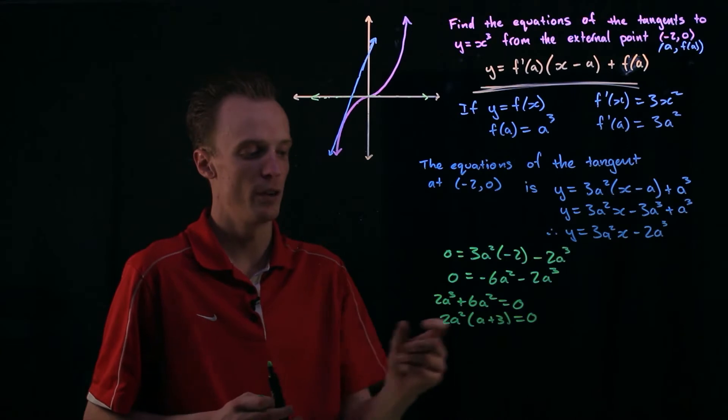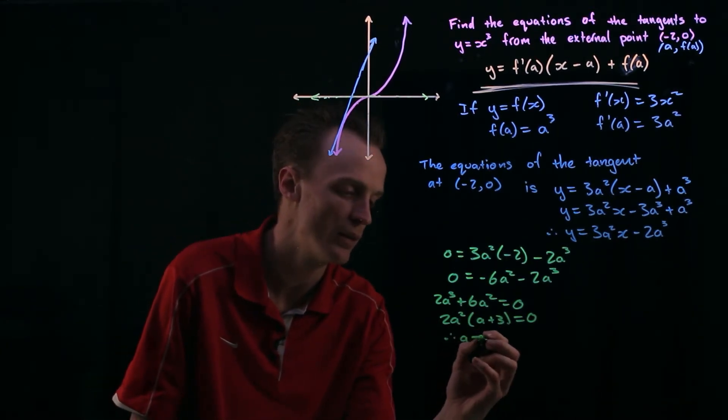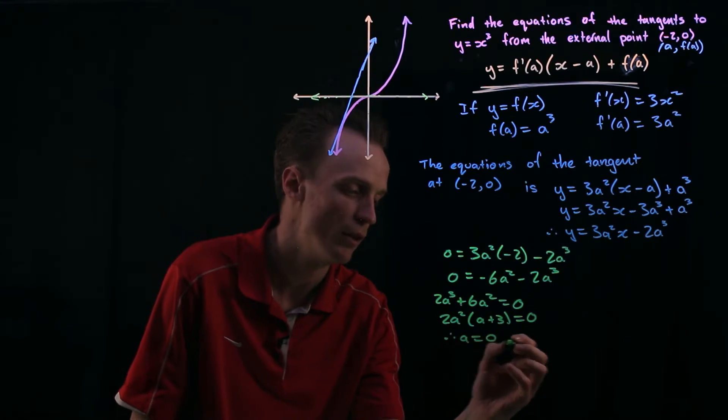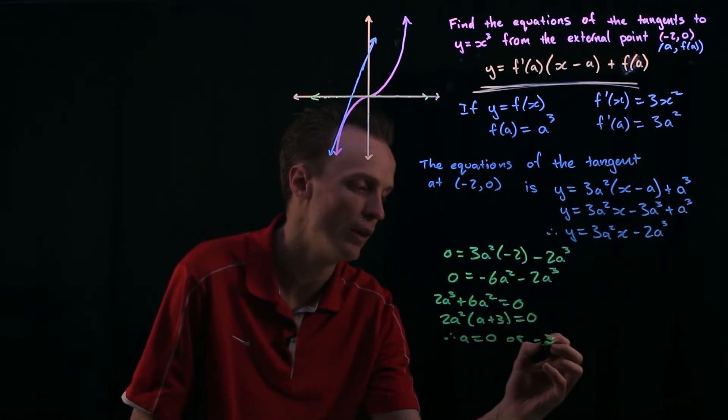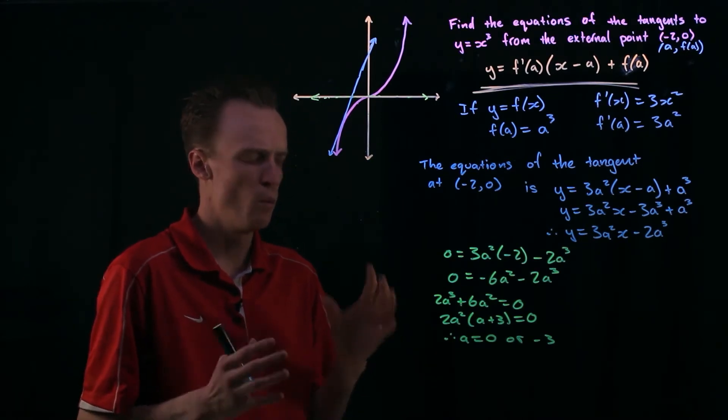So now what I've got is null factor law. I can say that my a has to equal either 0 or negative 3 for this to be true. So let's just stop for a second. Where are we up to?